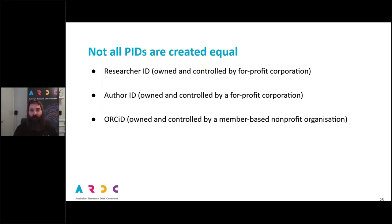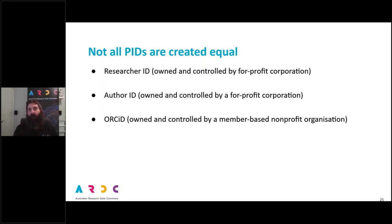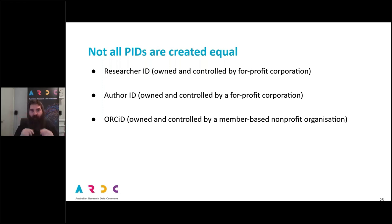Maybe in 20, 50, or 100 years' time there'll be some better way of handling this kind of identification. But for now, any organisation can join ORCID and become part of the governance that guarantees persistence. Here in Australia, there is an ORCID consortium led by the Australian Access Federation, and most Australian universities are members. I strongly recommend you go look at the AAF's website and learn more about that ORCID consortium.